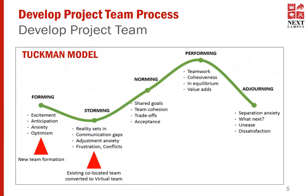In terms of developing a project team, there are a lot of models proposed. One model widely adopted by teams and organizations is the Tuckman model. In the Tuckman model, it is proposed that any team will have to go through five stages. The first stage is forming. In the forming stage, the team is just formed — people are put together and called a team. At this stage, you see a lot of excitement and anticipation because you don't know exactly how things will work.